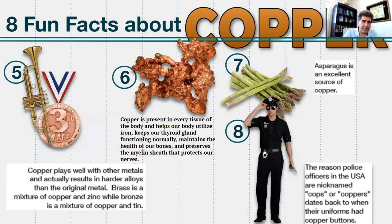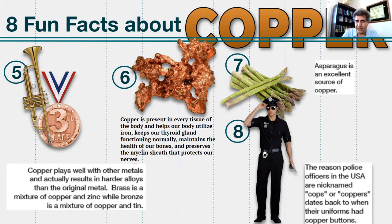The fifth fun fact: copper plays well with other metals, resulting in harder alloys than the original metal. We have brass — a mixture of copper and zinc — and bronze — a mixture of copper and tin. Copper is also present in every tissue of the body, helps utilize iron, keeps the thyroid gland functioning normally, maintains bone health, and preserves the myelin sheath that protects our nerves. Fact seven: asparagus is an excellent source of copper. And last but not least — the reason police officers in the USA are nicknamed 'cops' or 'coppers' dates back to when their uniforms had copper buttons.